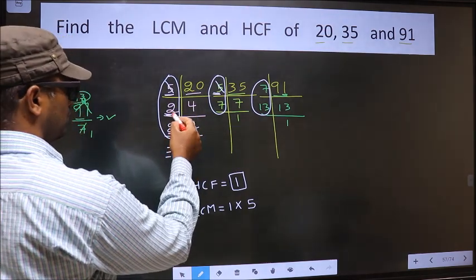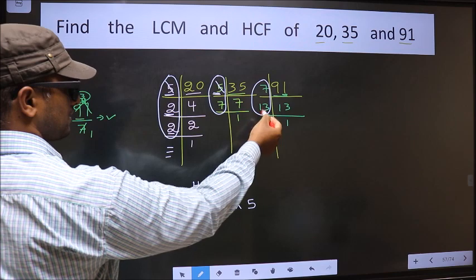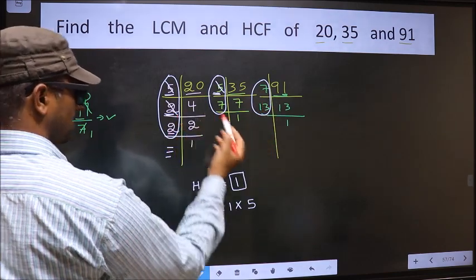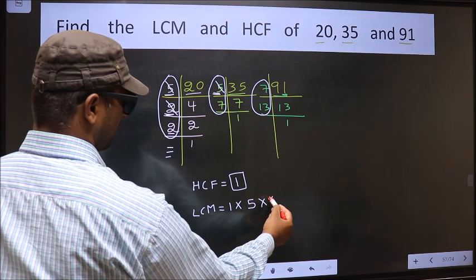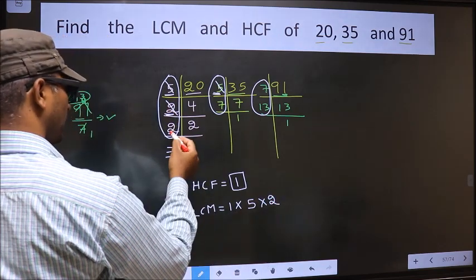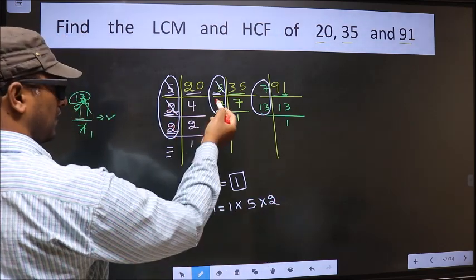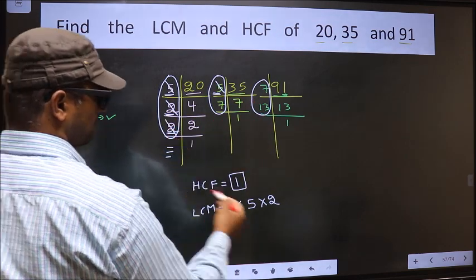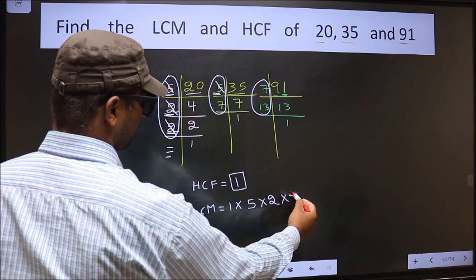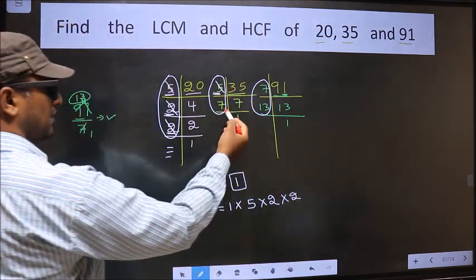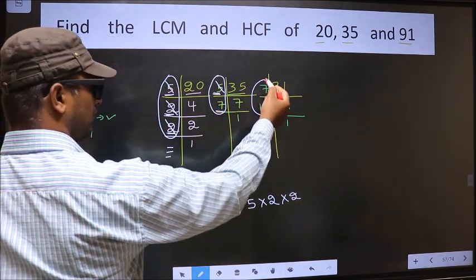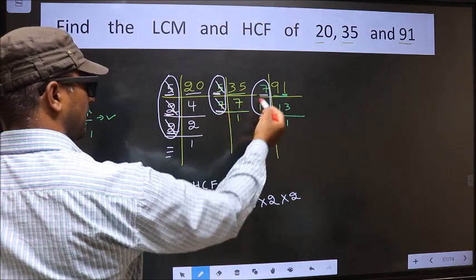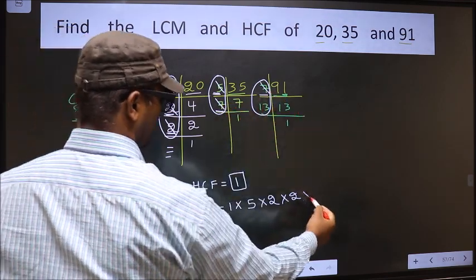Next number 2. Do we have 2 here? No. Next place, do we have 2 here? No. 2 present in only one place, so you cut 2 and write here. Here 2 is not cut. Do we have 2 here? Do we have 2 here? No. 2 present in only one place, so you cut 2 and write here. Now here 7 is not cut. Do we have 7 here? Yes. 7 present in two places, so you cut 7 and write here.